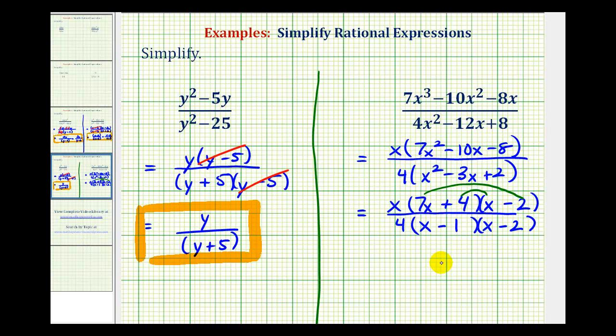The inner product is 4x, the outer product is negative 14x, and if we sum these, we would have a sum of negative 10x, which is good news because that's the middle term.